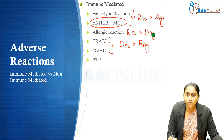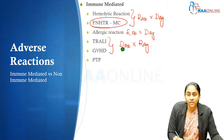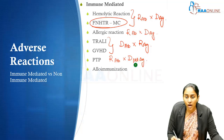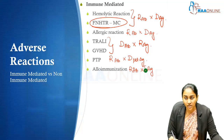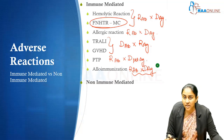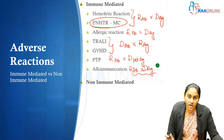Post-transfusion purpura is again caused by the recipient's antibodies targeted at the platelet antigens in the donor. Alloimmunization is also caused by recipient antibodies — the recipient develops antibodies to various antigens being exposed in the donor's blood component. These are the various immune mediated adverse reactions.